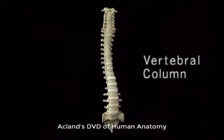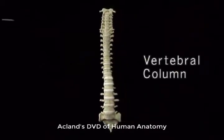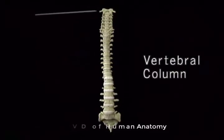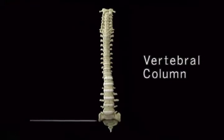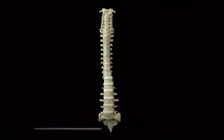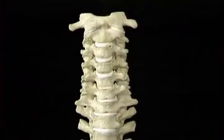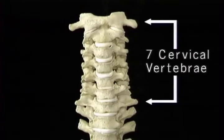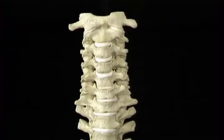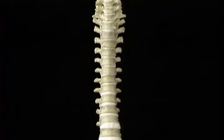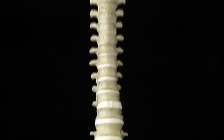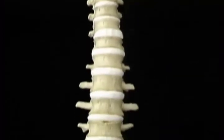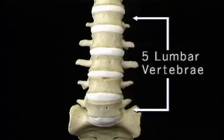Here's the vertebral column. It consists of 24 separate vertebrae, the sacrum, and the coccyx. There are 7 cervical vertebrae, 12 thoracic vertebrae, and 5 lumbar vertebrae.